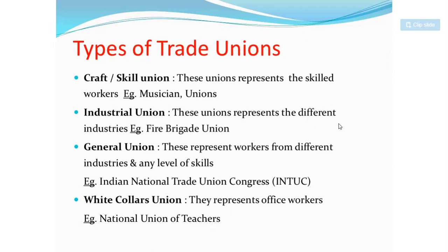The second type is the industrial trade union, which represents workers from different industries — for example, a fire brigade industry or textile mill industry. The third type is the general union, which represents workers from different industries at any level of skill. For example, the Indian National Trade Union Congress (INTUC) operates at the national level with members from different skills and areas — this is a general union.